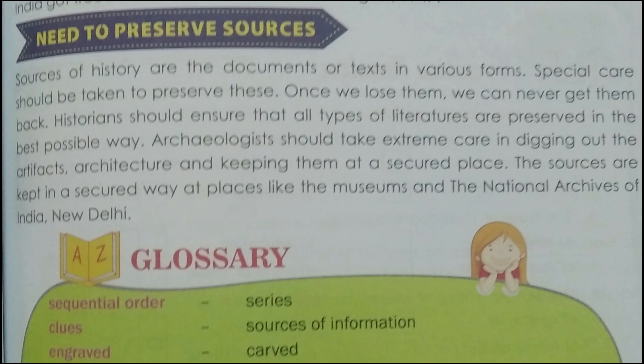Sources of history are the documents or texts in various forms. Special care should be taken to preserve these; once we lose them, we can never get them back. Historians should ensure that all types of literature are preserved in the best possible way. Archaeologists should take extreme care in digging out the artifacts and architecture and keeping them in a secured place. The sources are kept safely at places like the Museum and the National Archives of India, New Delhi.